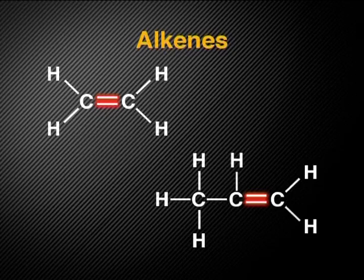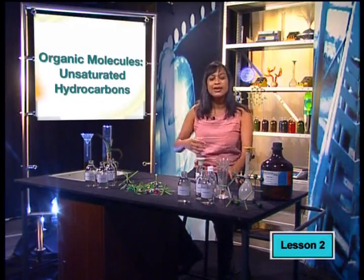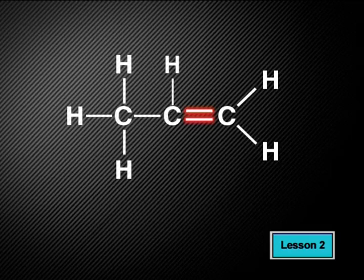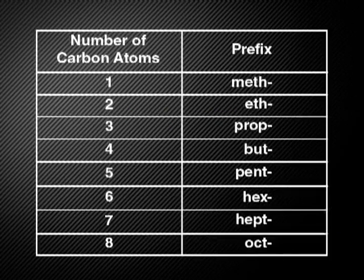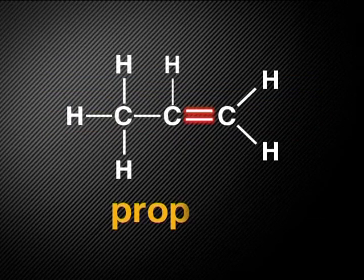Let's apply the IUPAC naming rules. We start naming any molecule by counting the carbon atoms in the longest chain — this gives us the first part of the name. In the IUPAC naming system, one carbon uses the prefix meth-, two carbons eth-, three carbons prop-. Now we look at the bonds. If the carbons were joined with single bonds, this would be propane. But because this molecule has a double bond, it belongs to the alkenes — so this molecule is propene.